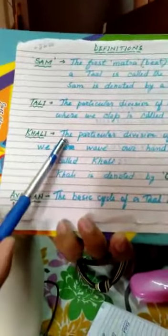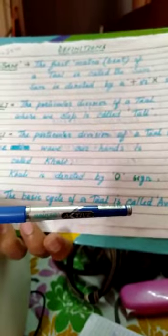And khali. The particular division of a tal where we wave our hands is called khali. Khali is denoted by a zero sign. So whenever you see a zero mark, then you can understand that you have to show khali at that particular matra.